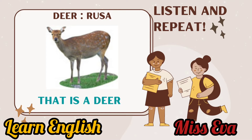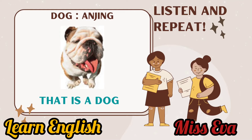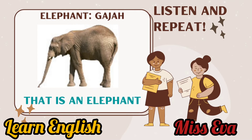Deer. That is a deer. Repeat. Dog. Listen — that is a dog. Now you repeat. Elephant. Listen — that is an elephant. Yes, that is an elephant. Now you repeat.